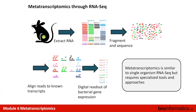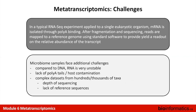How does metatranscriptomics work? It's similar to an RNA-seq experiment: extract the RNA, fragment and sequence it, align to known transcripts, and get a digital readout of gene expression. However, unlike standard RNA-seq on a single eukaryotic organism where you can isolate RNA through the poly-A tail, bacteria don't have poly-A tails. This means you have to sequence all the RNA, which includes ribosomal RNA making up about 95% of RNA in a typical bacterial cell.